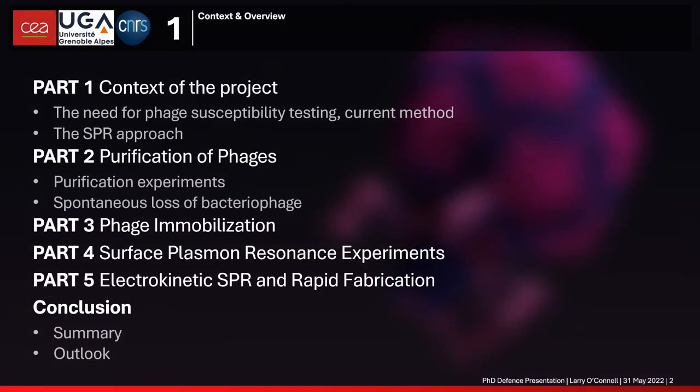First, an overview of the talk. I'm going to talk about the context of the project — why we want to carry out phage susceptibility testing, the current methods used, and the approach we're exploring. Before we can make our biosensors, we need to cover purification of our phages and dealing with spontaneous loss — that's Part Two. Part Three covers immobilization, Part Four the SPR experiments, and Part Five a method for improving the sensitivity of SPR assays.